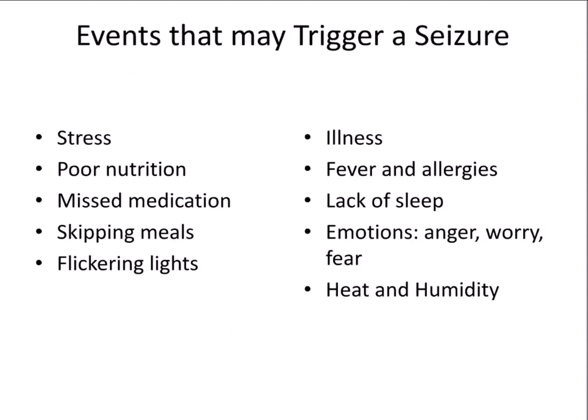If a patient has a past medical history of seizure events, you want to know what things could possibly trigger a seizure so that you avoid them when working with the patient, and educate the patient to avoid these things to decrease the frequency of their seizures. Triggers include overall stress, poor nutrition, missing medication, skipping meals, flickering lights — sometimes patients seize just playing video games because of the flickering screen — illness, fever, allergies, lack of sleep, excessive emotions, heat, and humidity.